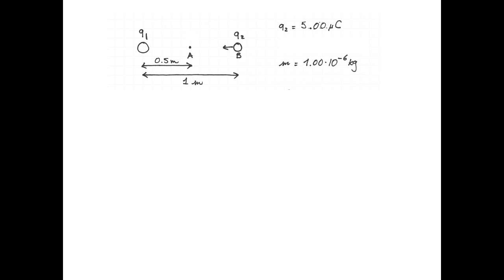First step, as always, draw a picture. So we'll draw q2 at point B going towards q1 and write down the charges. q2 is 5 microcoulombs and its mass being 1 milligram is 1.00×10⁻⁶ kg. The goal of the problem is to figure out whether q2 stops and turns around or whether it hits q1.